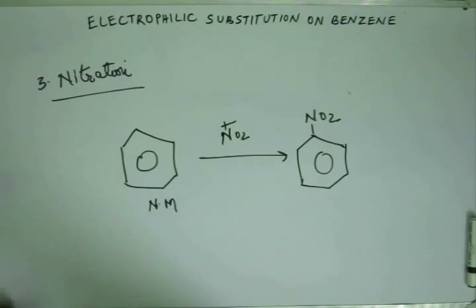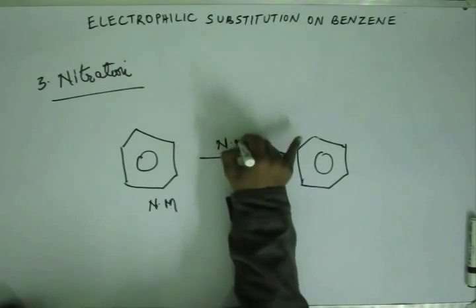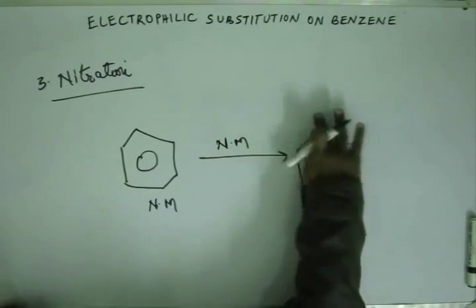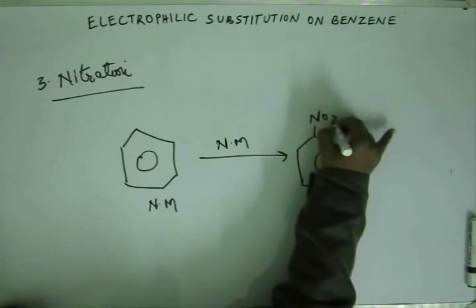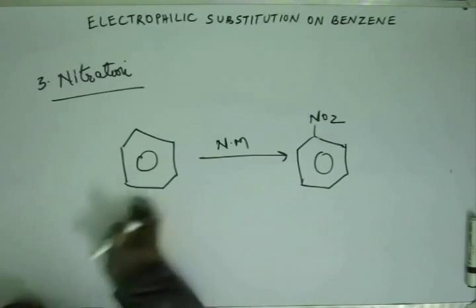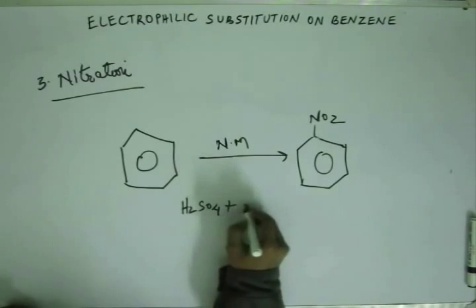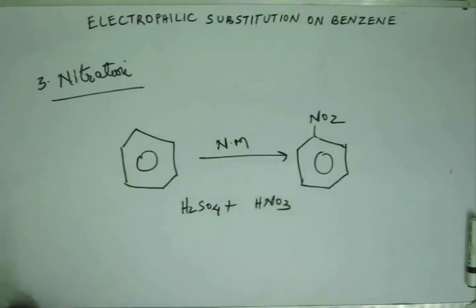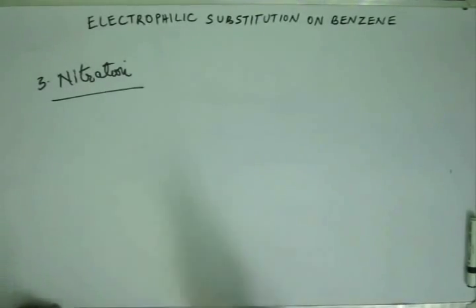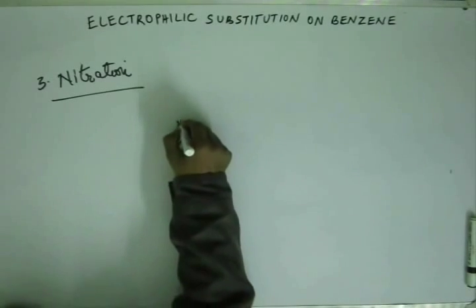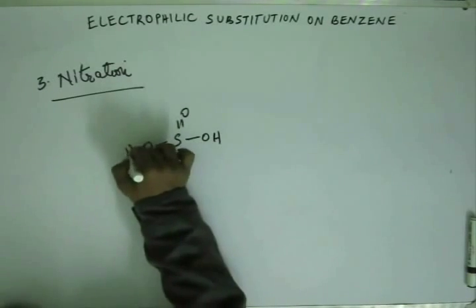Now, the task is to understand how NO2+ is produced. NO2+ is produced by a nitrating mixture, often written as N.M. When you see benzene with N.M., you understand it means nitrating mixture and you are to do nitration. The nitrating mixture is a 1:1 ratio mixture of sulfuric acid (H2SO4) and nitric acid (HNO3).